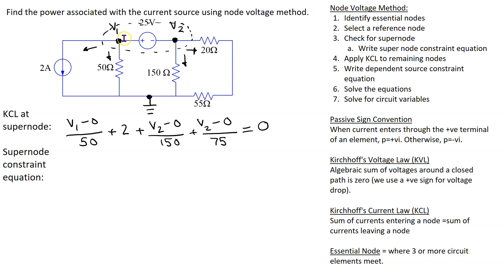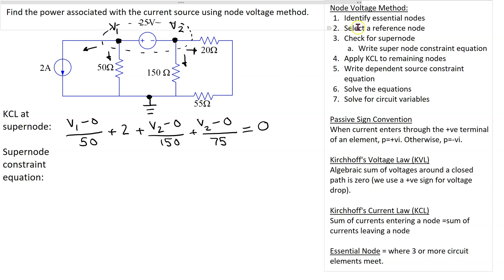Recall that a node voltage is defined as a voltage rise with respect to ground. So v1 is defined as a voltage rise with respect to ground, and v2 is a voltage rise with respect to ground, irrespective of whether v1 and v2 have positive or negative values. This means we can represent the super node accordingly.